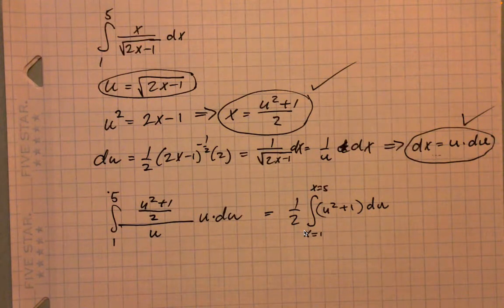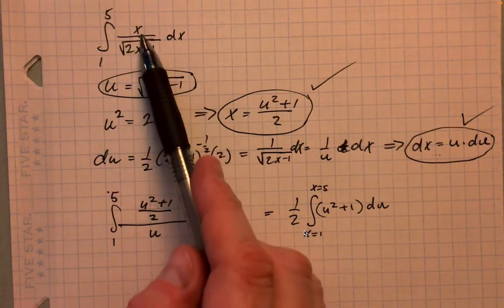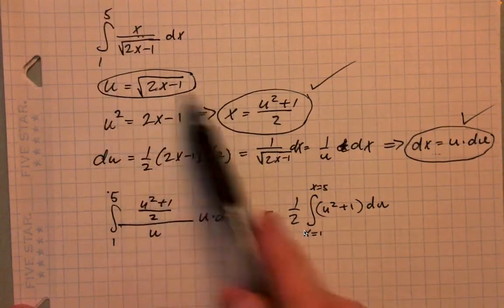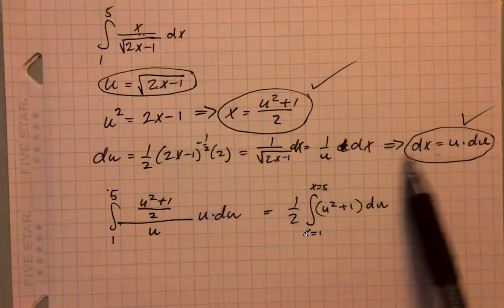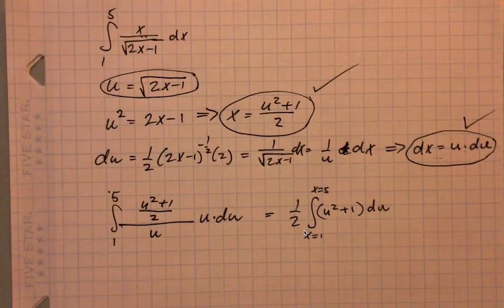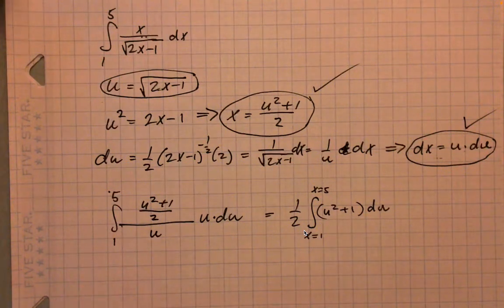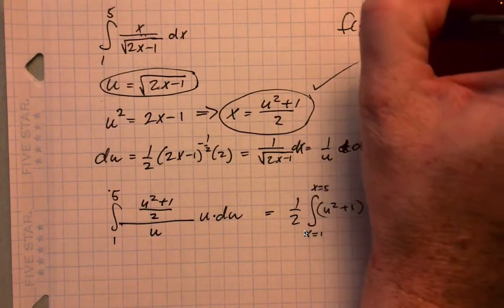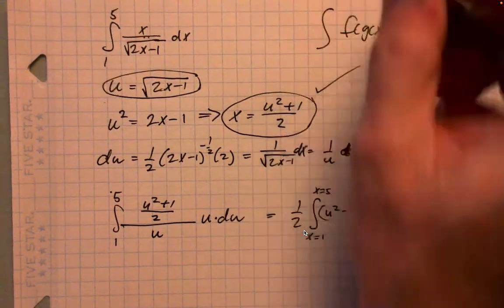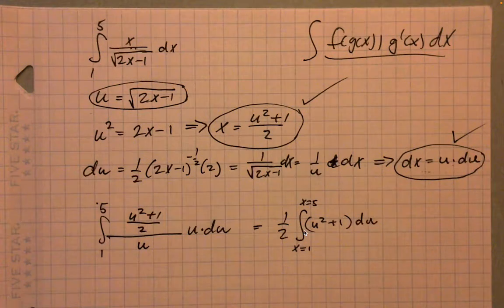The way that I would recommend you think about these u substitutions is any valid algebraic technique that is necessary here can pretty much be used. If I'm stuck with this x up here, I need an expression for x in terms of u. I can just use this, do the algebra needed to get x in terms of u and just plug it in. And similarly, if I need an expression for dx, I can just do whatever algebra is necessary to get dx written in terms of u and du or some constants. Some of these integrals will not obviously fit the pattern of f of g of x times g prime of x dx. They won't always fit that pattern, but very often you can force them, force a fit using different algebraic techniques.